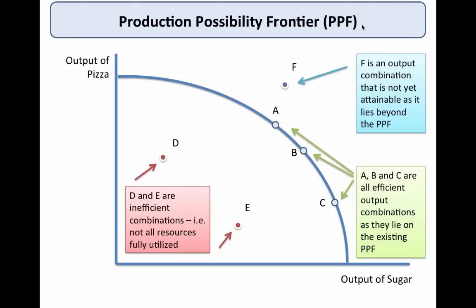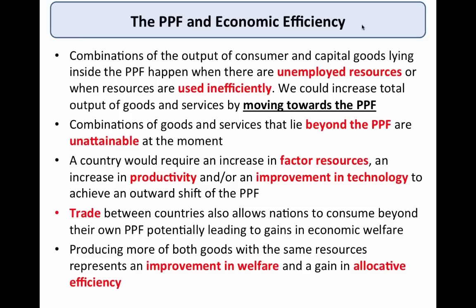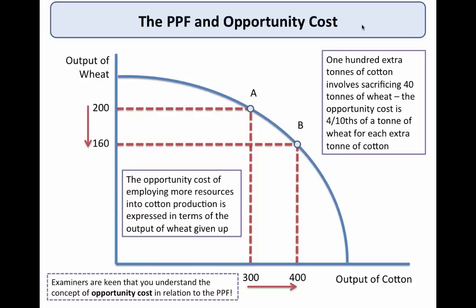Most PPFs are drawn as concave to the origin, partly because of the law of diminishing returns — the resources used in producing good X may not necessarily be as productive or suitable when producing good Y. That links to the idea of opportunity cost changing as we move from good X towards good Y. Points D and E inside the PPF signify either unemployment of resources, underutilisation of factor inputs, or inputs not being used productively. Point F lies beyond the PPF and is not yet attainable, whereas points A, B and C along the PPF are economically efficient outputs.